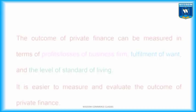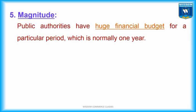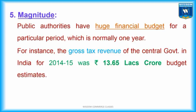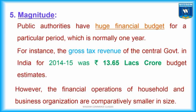Point No. 5 — Magnitude. Public authorities have huge financial budgets for a particular period, which is normally one year. For instance, the gross tax revenue of the central government in India for 2014-15 was Rs. 13.65 lakh crore (budget estimates). However, the financial operations of households and business organizations are comparatively smaller in size.